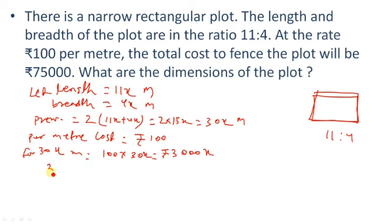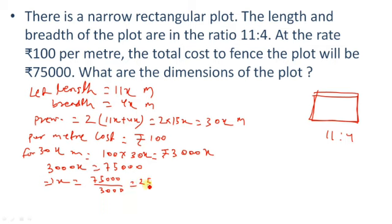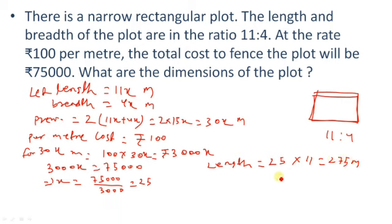Solving: x equals 75,000 divided by 3,000, which equals 25. Now we find the dimensions: length equals 11x equals 11 times 25 equals 275 meters. Breadth equals 4x equals 4 times 25 equals 100 meters. So the answer is length is 275 meters and breadth is 100 meters.